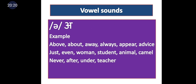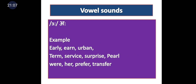The next pure vowel is the schwa /ə/ — an inverted V symbol. Examples initially: above, about, away, always, appear, advice. Medially: just, even, woman, student, animal, camel. Finally — important note: when 'r' appears at the end of a word, it is not pronounced. So: never, father, mother, after, under, teacher — we wrongly say these with the R sound, but the schwa at the end is silent. Do not pronounce the R sound finally.